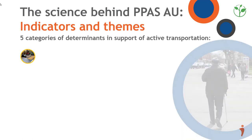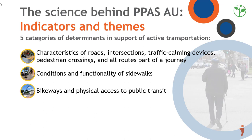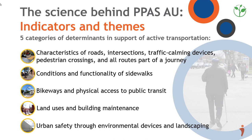The Audit PERS-AU includes several Universal Design criteria divided into five categories of determinants for evaluating urban environments' safety and accessibility in favor of a healthy lifestyle, autonomy, and social participation. The tool makes systematic and objective observations on a microscale, such as pathways and intersections, public transit and facilities.